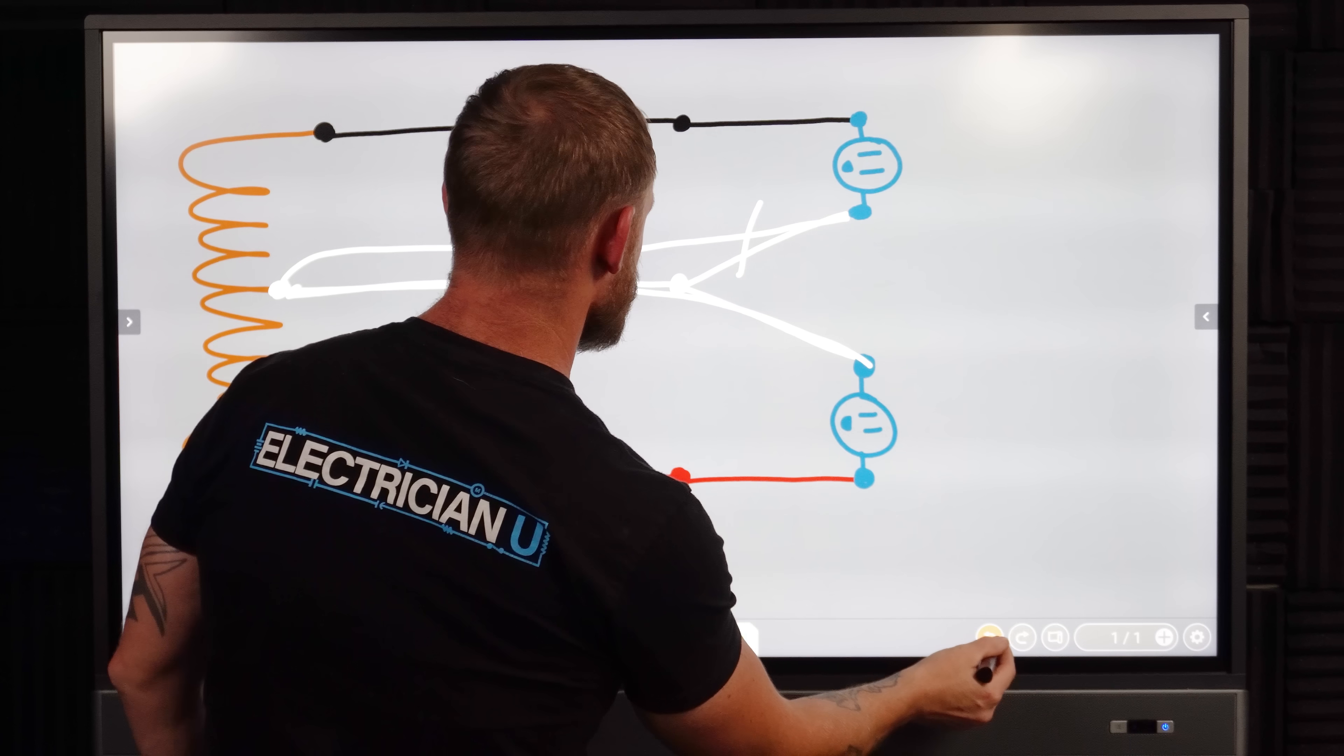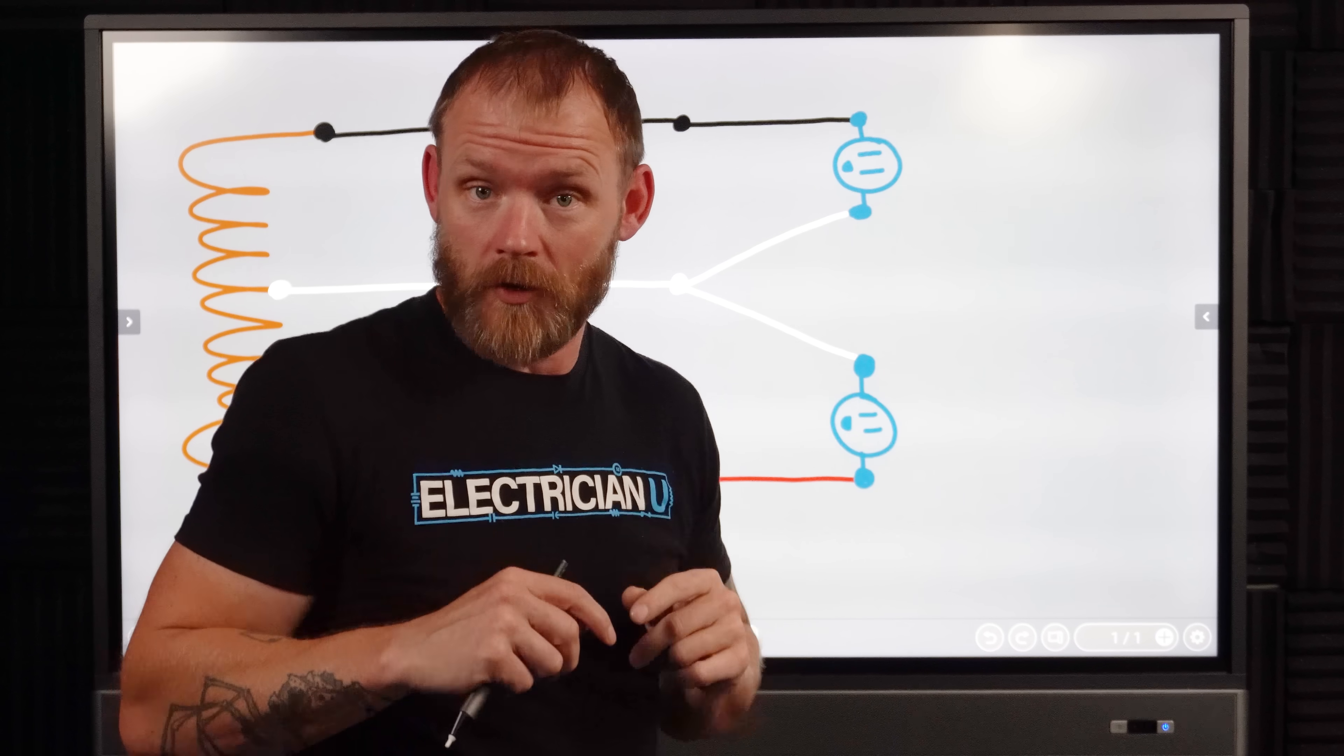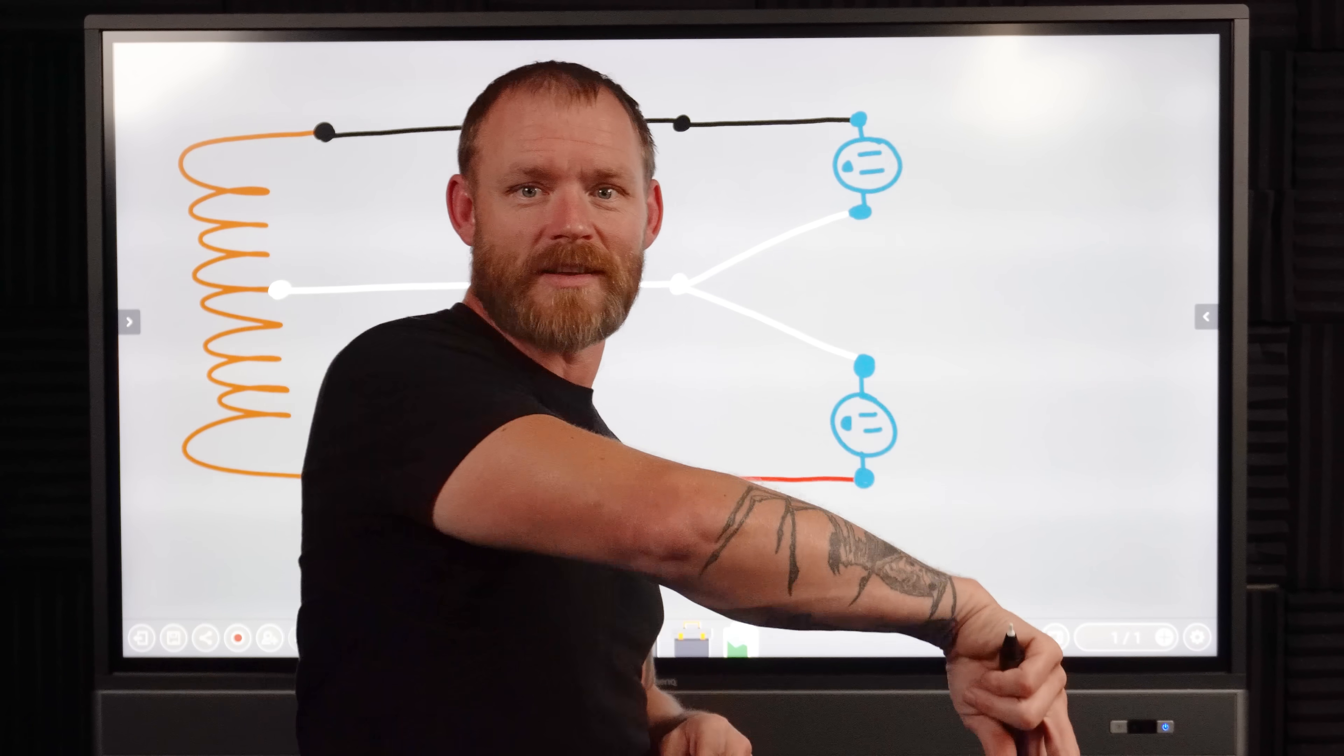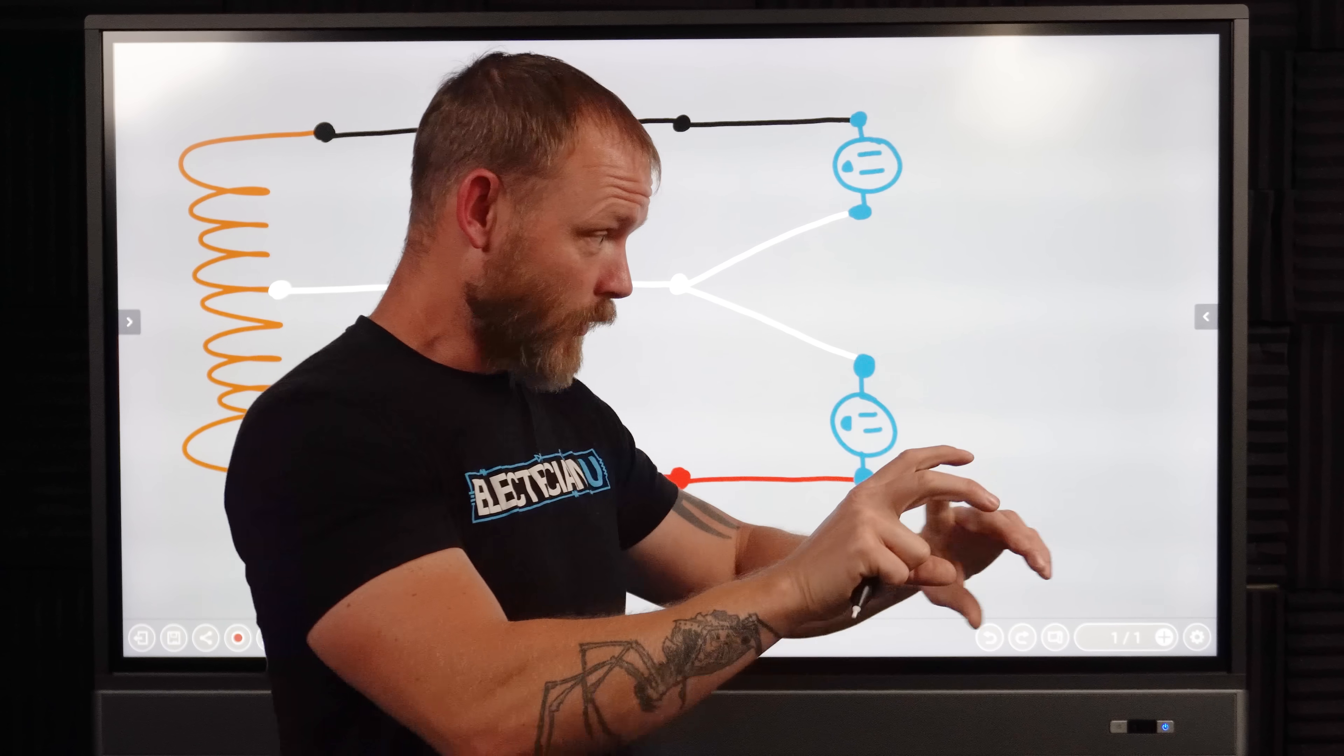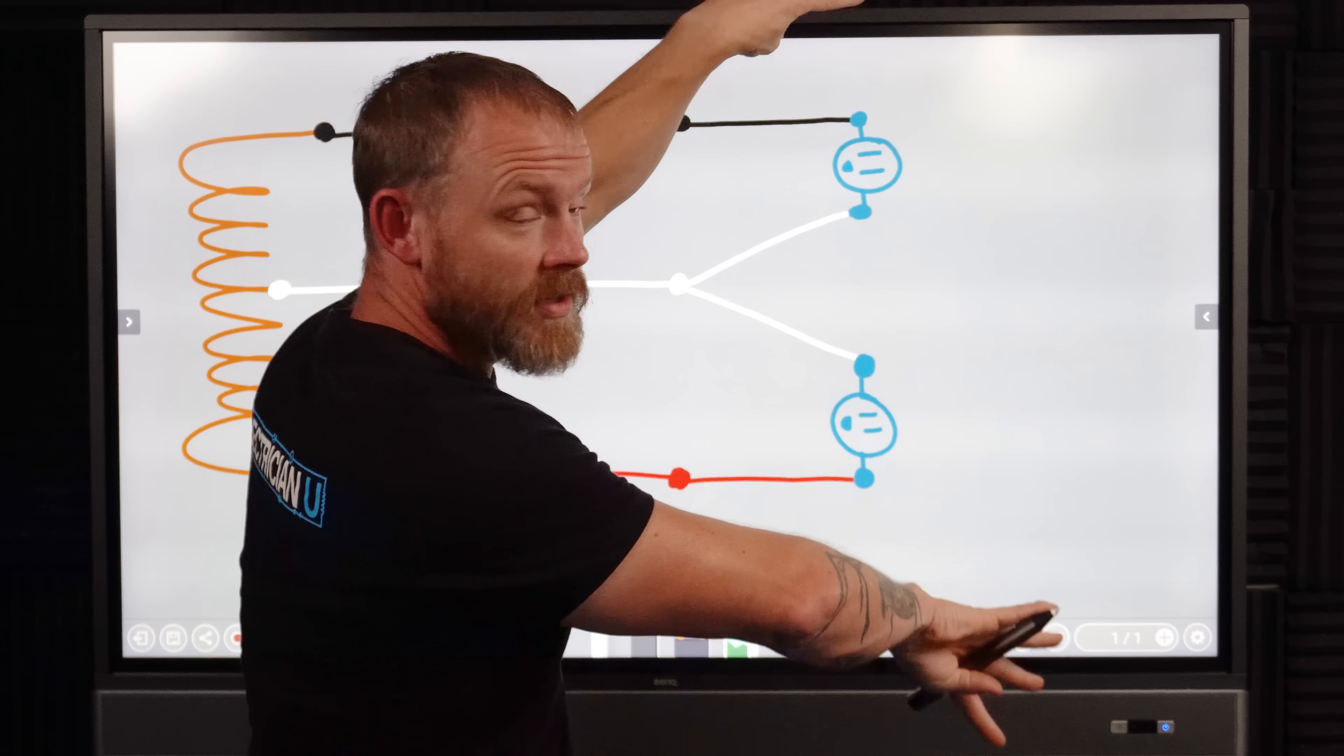But if we have a shared neutral situation, say we have a 12 three, a lot of older homes, like seventies era, eighties era, they would run 12 threes from their panel outside and run them everywhere just to save one conductor. You know what I mean? Saving that one conductor was cheaper than doubling up the amount of 12 two that you're running through a house. So a lot of GFI circuits in kitchens and things like that, that are kind of close to each other. They would just make joints in the back of a junction box, put one circuit worth of plugs on one, and then you would just pass the other circuit through onto something else. So we have a shared neutral.